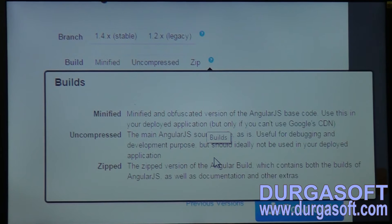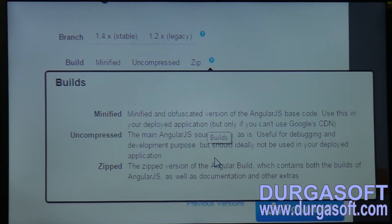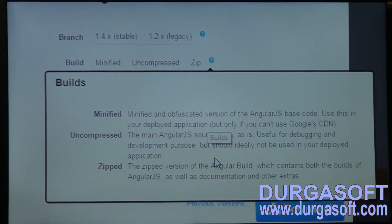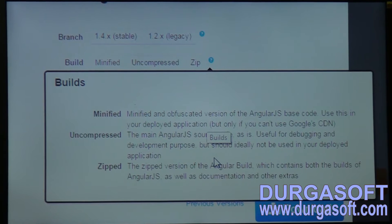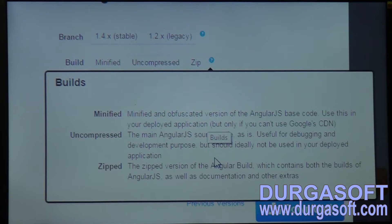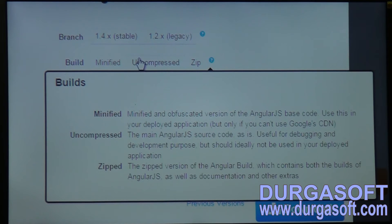In real-time applications, especially while developing, uncompressed is recommended. But at the time of uploading the project, minified is the best. In the case of zip, AngularJS and all its related libraries will be downloaded — meaning the main AngularJS file plus AngularJS animations, AngularJS routing, and many additional libraries. Presently I prefer uncompressed.